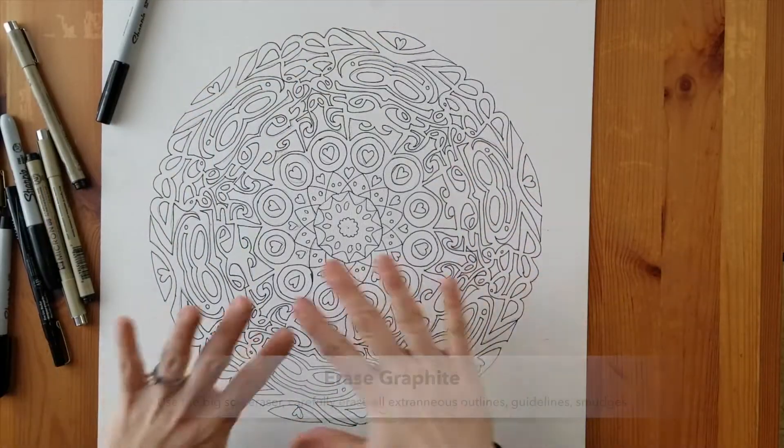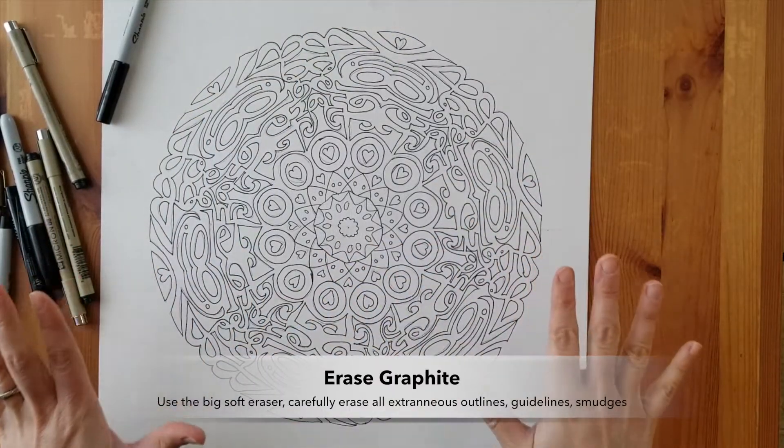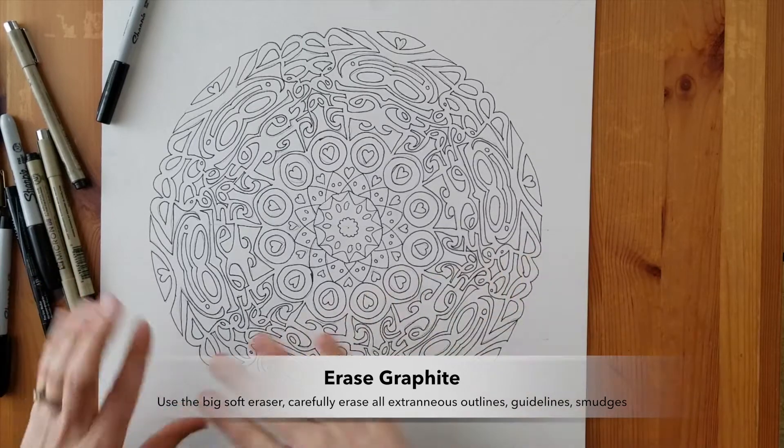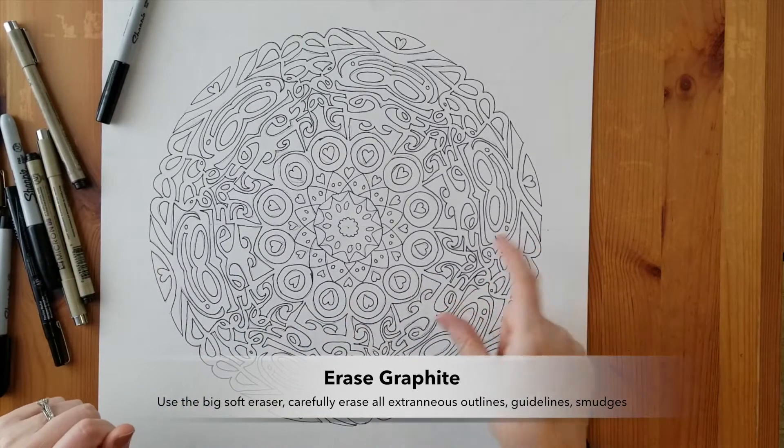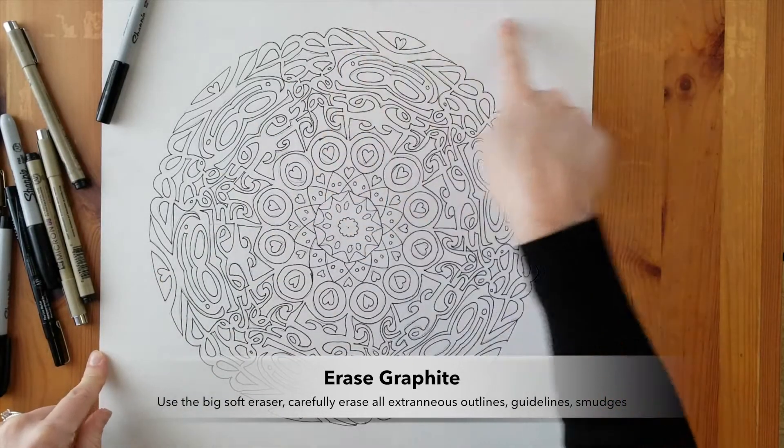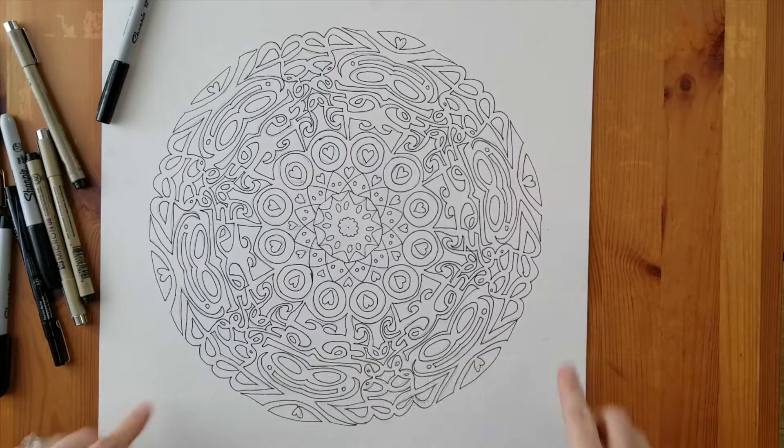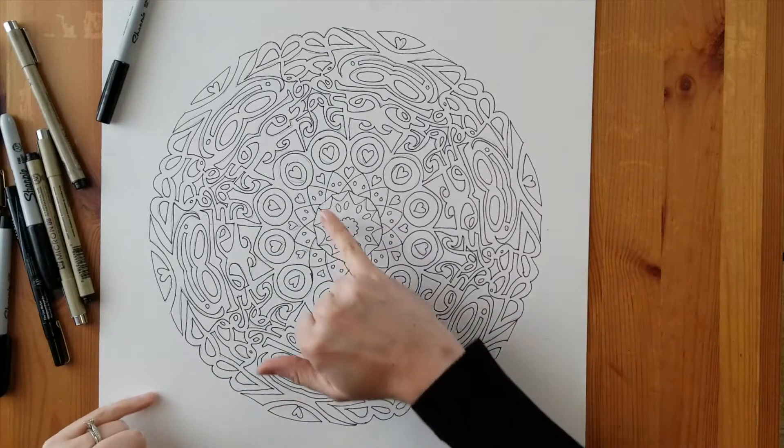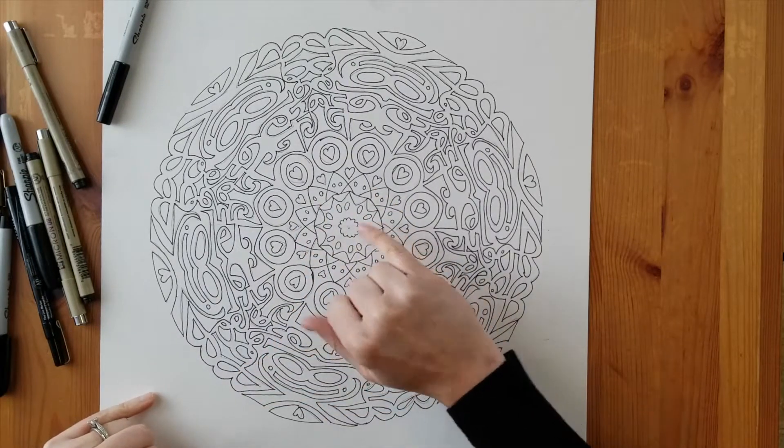Once you have your whole design totally inked, you want to get one of those big soft erasers and grab it and erase all of the extra pencil lines on your piece. You don't want to have any graphite showing through, any of the guidelines that you drew.